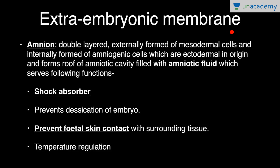Extra embryonic membranes. We have four extra embryonic membranes: amnion, yolk sac, allantois and chorion. Starting with amnion — it is double-layered, externally formed of mesodermal cells and internally formed of amniogenic cells, which are ectodermal in origin, and forms the roof of the amniotic cavity filled with amniotic fluid.